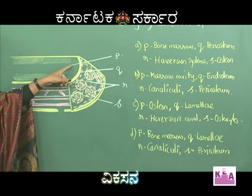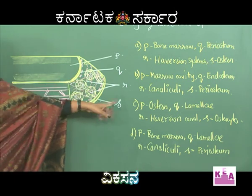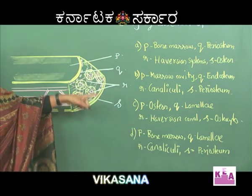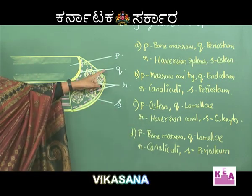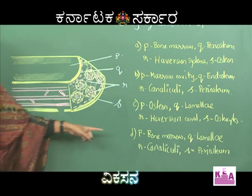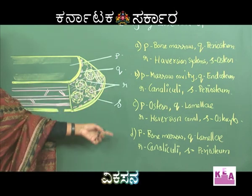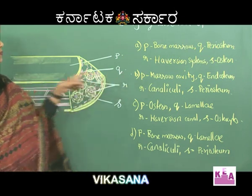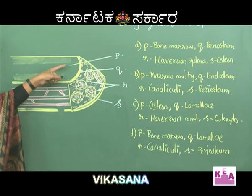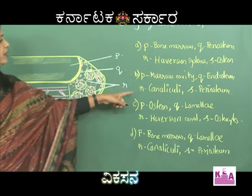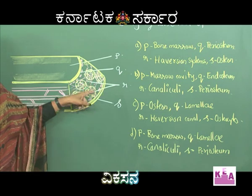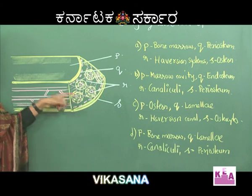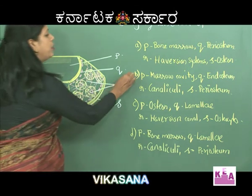Option C: P is osteon - wrong option. Option D: P is bone marrow - correct, but Q is labeled as lamellae which is wrong. So among all four options, the right option is B, where P is marrow cavity, Q is endosteum, R is canaliculi - protoplasmic connections - and S is periosteum, the outermost covering of the bone. Therefore B is the correct answer.